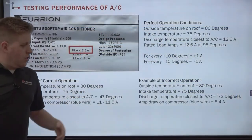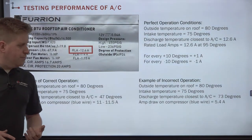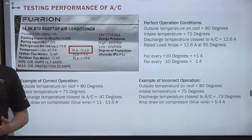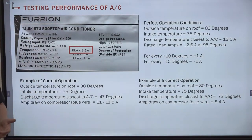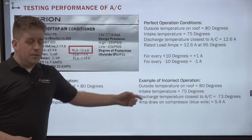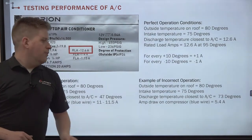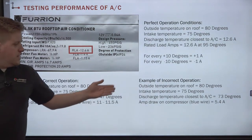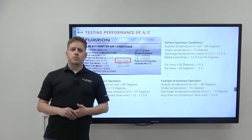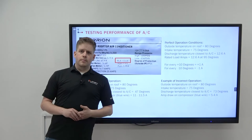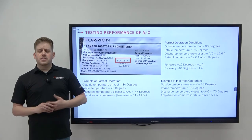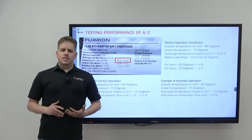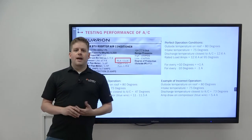For an incorrect air conditioner example: outside temperature is 80 degrees, intake is 75 degrees, but discharging air is 73 degrees — very poor performance. The amp draw is only 5.4, which is very low. This is an example of a unit that has lost its refrigerant. With no refrigerant in the system, there is no resistance for the compressor, so it does not have to work as hard.